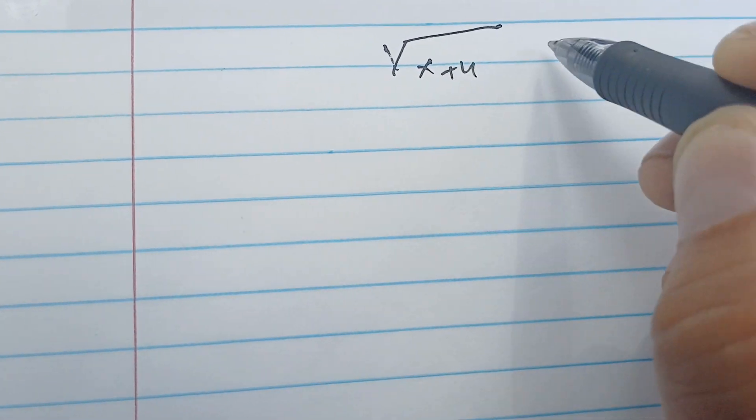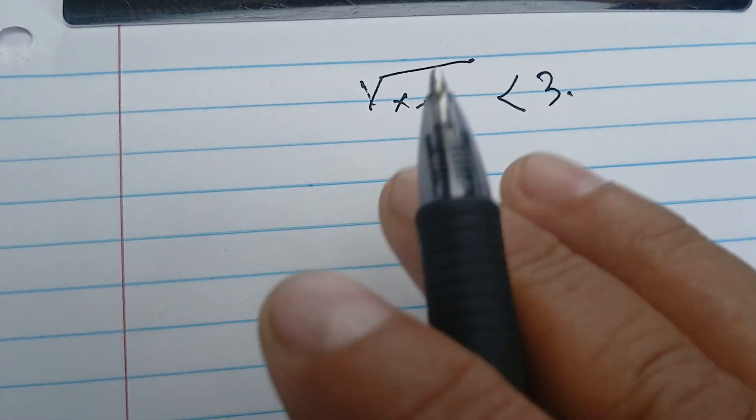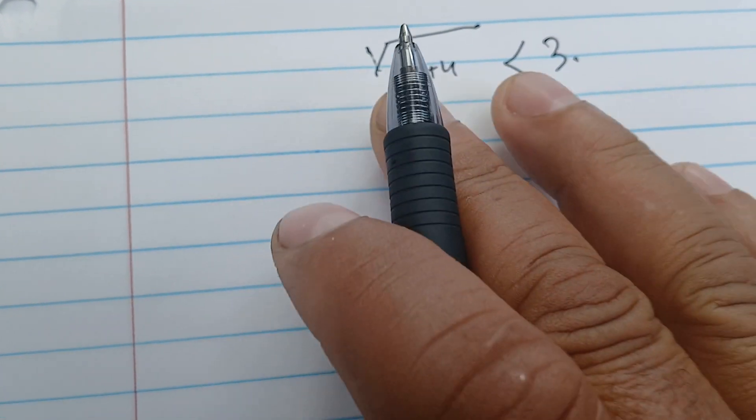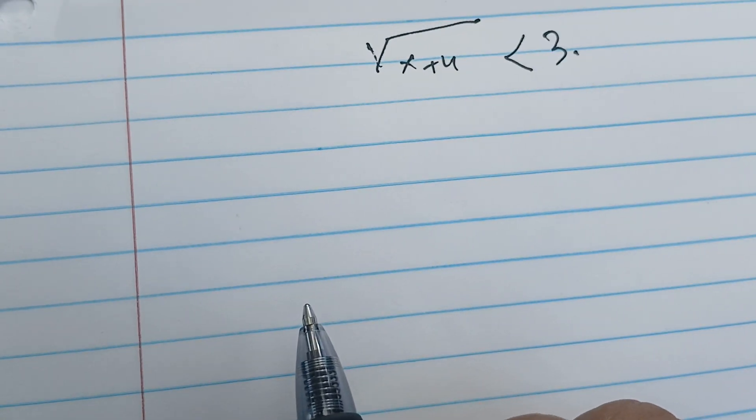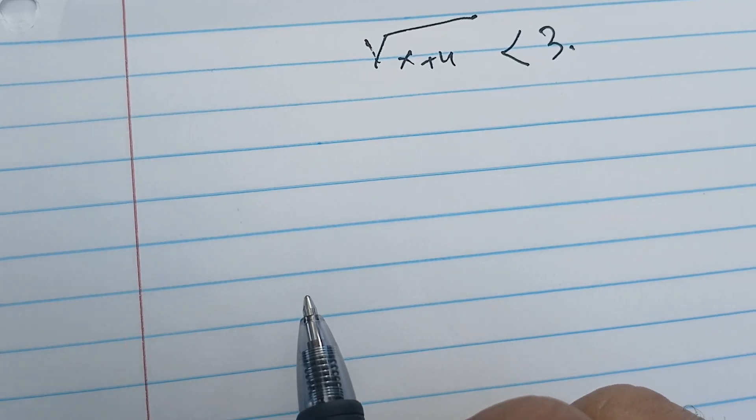Okay, in this video we're going to try to solve the following inequality: square root of x plus 4 is less than 3. So we want to find the values of x that would make this inequality true.